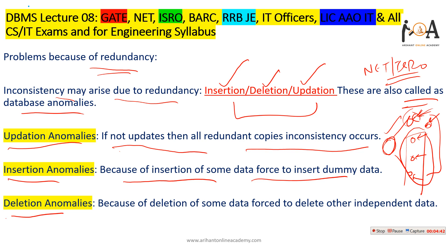Deletion anomaly occurs because deleting some data may force you to delete other independent data as well. For example, if the same data exists at three places and you delete it from one place, you must also delete the remaining copies; otherwise it causes inconsistency in the database. That is why we use normalization — to maintain database organization so that whenever we update, insert, or delete, such inconsistency does not occur.